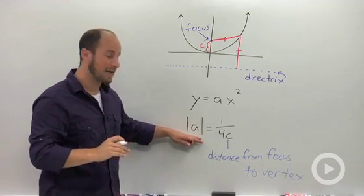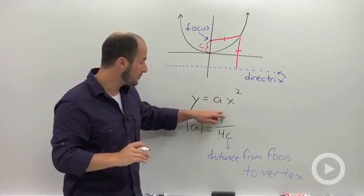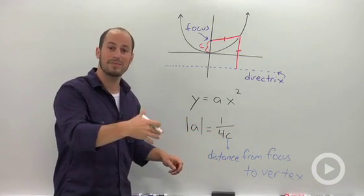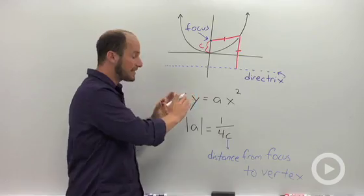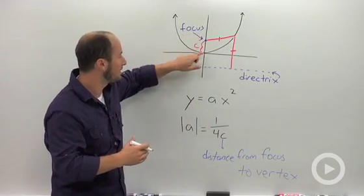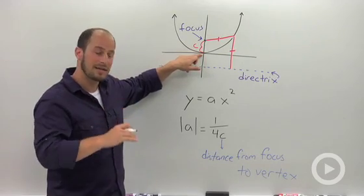And the absolute value of a is going to be equal to 1 over 4c, that distance. So that's actually one way we can figure out exactly how steep or wide this parabola is, is by knowing the distance between the focus and the vertex.